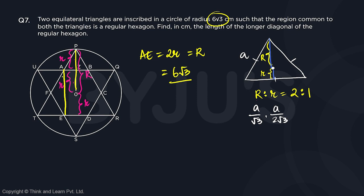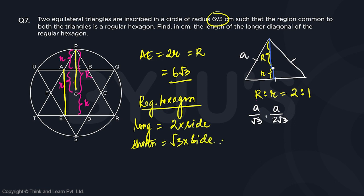So if this is 6 root 3, A, E is also 6 root 3. Now since A, E is 6 root 3, this is not the longest diagonal. In the case of a regular hexagon we have two types of diagonals. The long one is given as two times the side of the regular hexagon, and the shorter one is given as root 3 times the side of the regular hexagon.